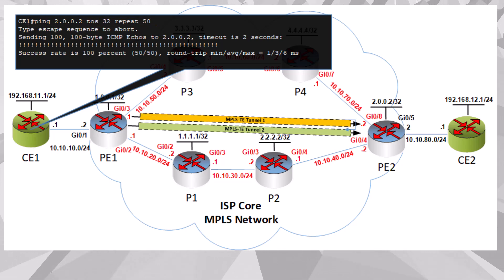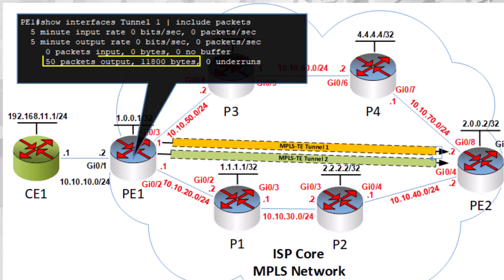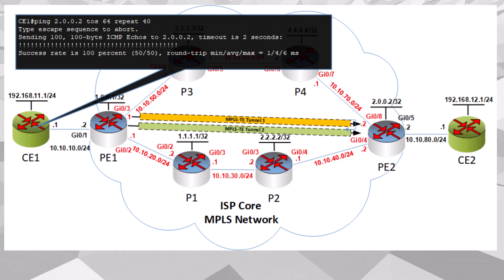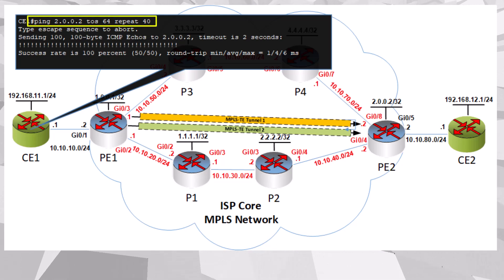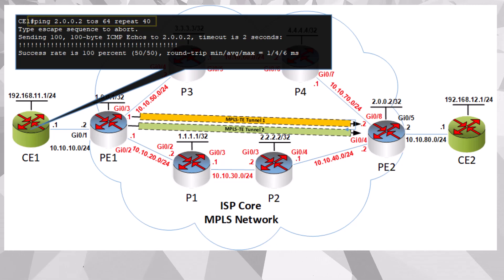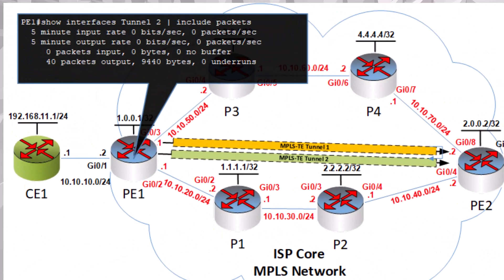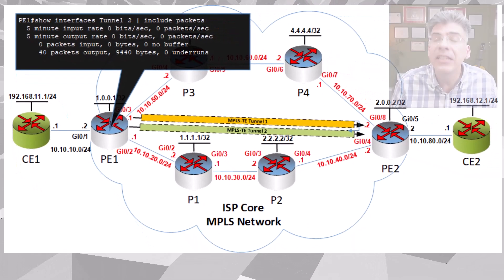Let's issue our ping with a TOS of 32 and see which tunnel was used. Looking at tunnel 1 on PE1, we can see that tunnel 1 was used for 50 packets — so it looks like the correct tunnel was used for our pings. Let's try some more pings using an EXP value of 2. To achieve this, we use a TOS value of 64, which will be translated to an EXP value of 2. This time we'll be pinging 40 packets. Looking at tunnel 2, we can see that 40 packets were indeed routed via this tunnel. We have now confirmed that the correct EXP values are selecting the correct tunnels.